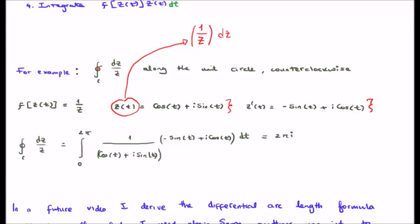Then we take our parameterized z(t) and plug it into our original function anywhere we had z. So in this case it's one over z, so we get one over (cos(t) + i*sin(t)). We multiply it by the derivative of z and integrate dt. The answer of course is 2πi.